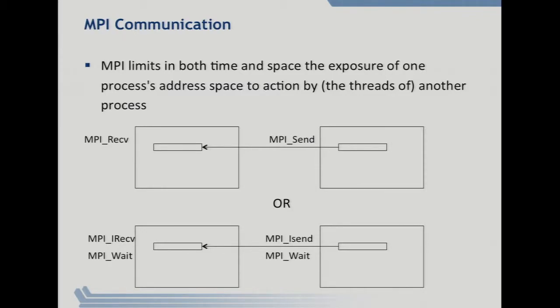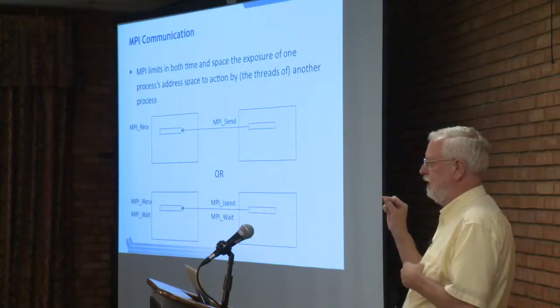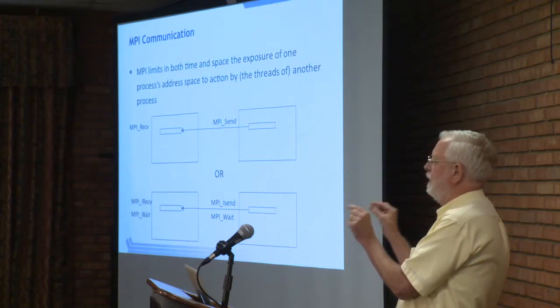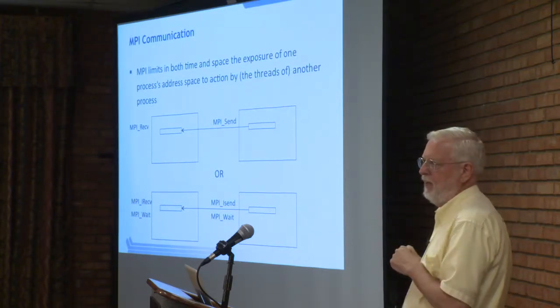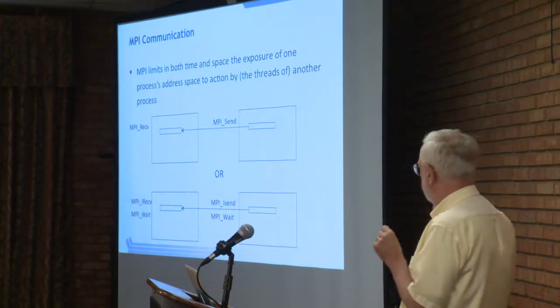Similarly, the send says I'm going to take this and put it in that other process's memory because he has made that available. With non-blocking send and receive, the idea is separating the notion of opening up this memory and then leaving it open while maybe doing something else. When you say MPI_Wait, that closes it - the other process can't access that memory anymore, and then you can use it.